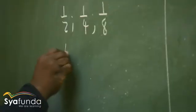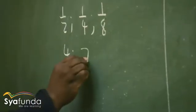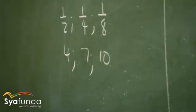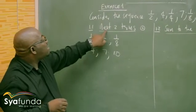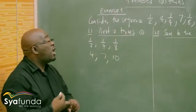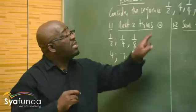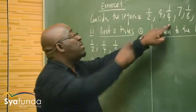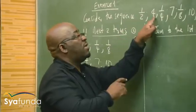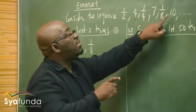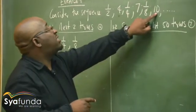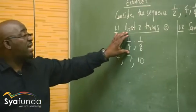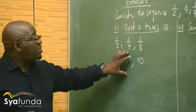The next sequence will be 4, 7, 10. Look at the question — it says write the next two terms of that sequence. It is important to note that since this is the first term, second term, third term, fourth term, fifth term — the next term and the second next term will come from each respective pattern.